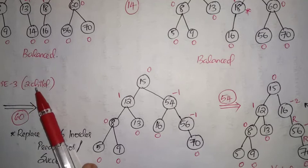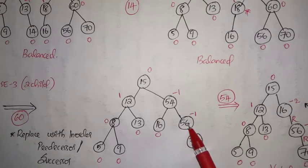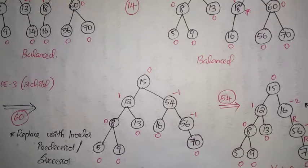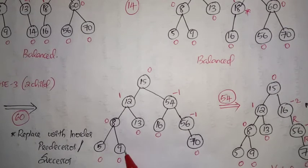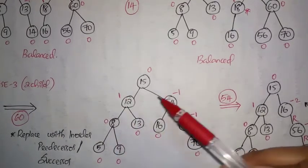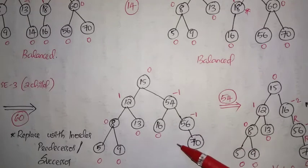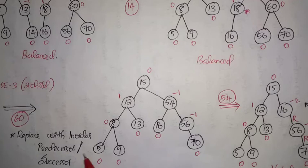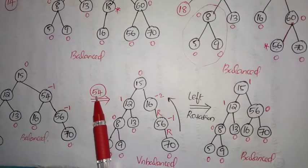We need to delete node 60. Node 60 has to be replaced with its in-order predecessor — that is 56 — and 60 is deleted. After that, we find the balancing factor: leaf nodes are 0, 0, 0, 0, 0. Here 1 minus 1 equals 0; 2 minus 1 equals 1; 3 minus 3 equals 0; 1 minus 2 equals minus 1; 0 minus 1 equals minus 1. Since all balancing factors are 0, 1, or minus 1, this tree is balanced.